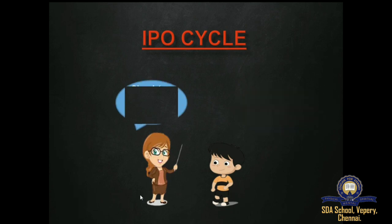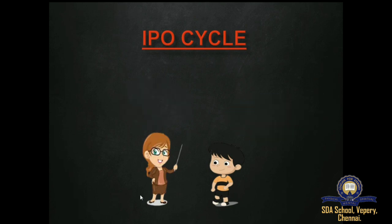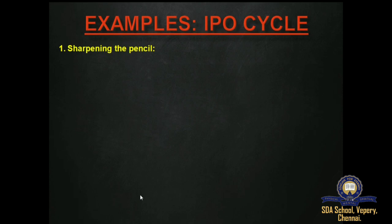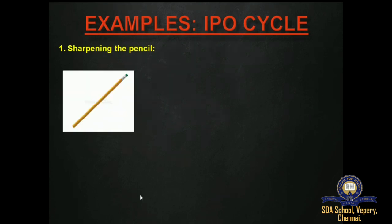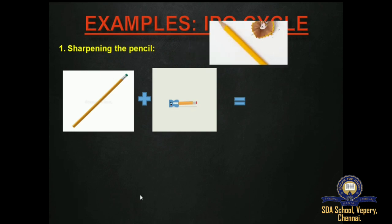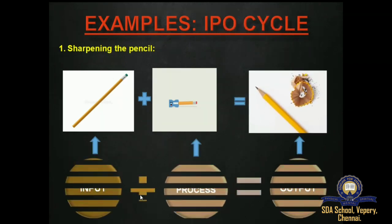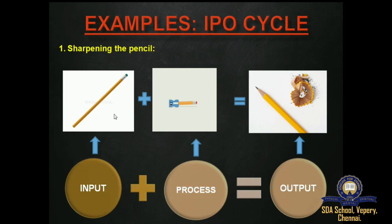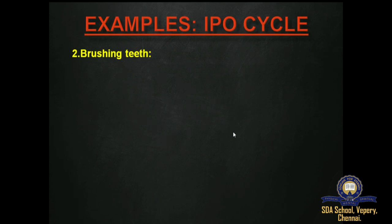A student asked: I did not understand about the IPO cycle. The teacher replied: Okay, let us look at some real-life examples. The first real-life example of the IPO cycle is sharpening a pencil. The input is the new pencil, the process is sharpening the pencil, and the output is the sharpened pencil.